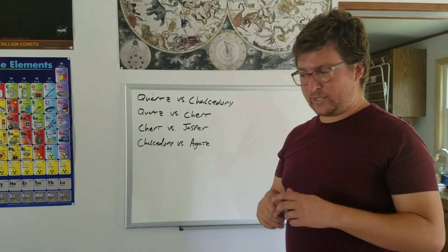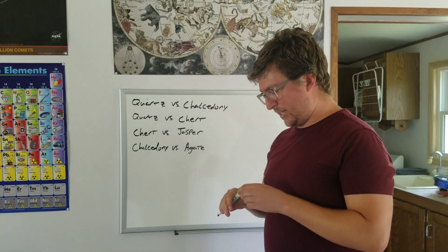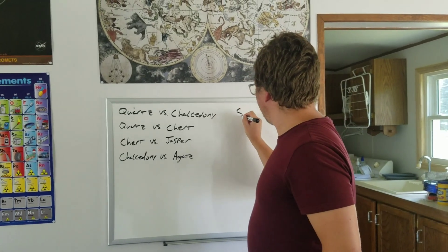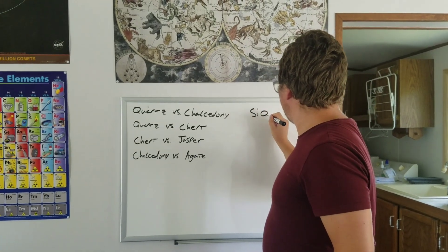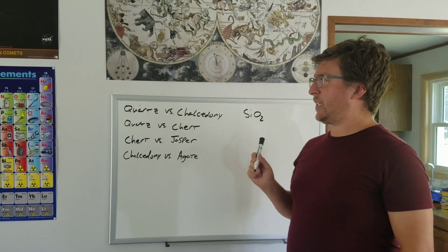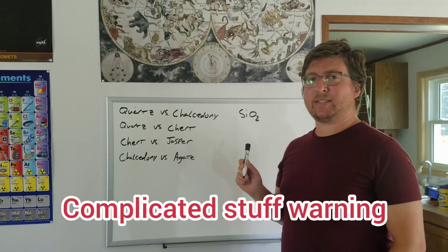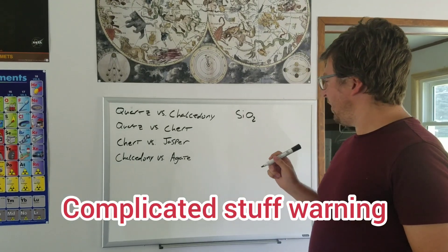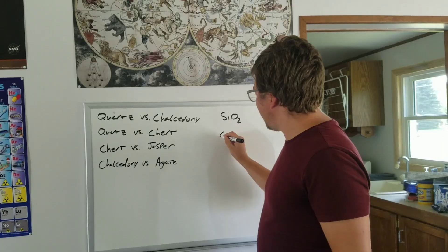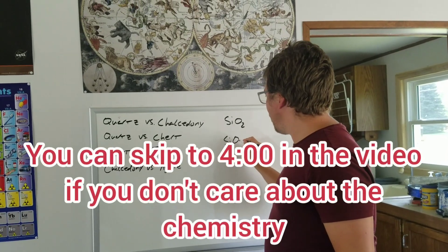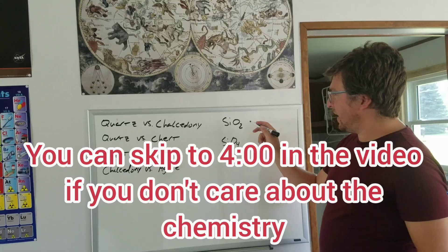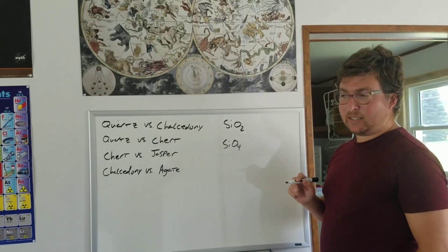First of all, quartz. Let's talk about what quartz is. Quartz is silicon dioxide, SiO2. Now this is interesting, because this is actually unstable. If you look at the chemical formula, it doesn't actually make sense. Because if you isolate the molecule, what you need to have is SiO4.